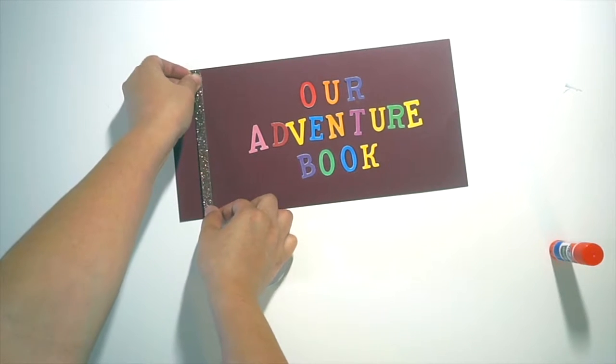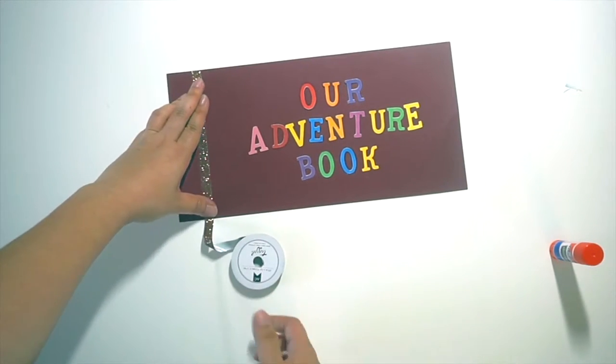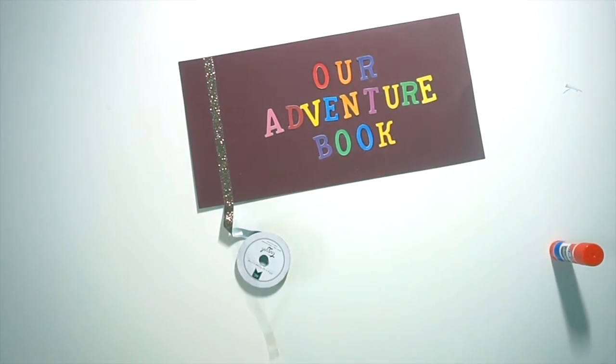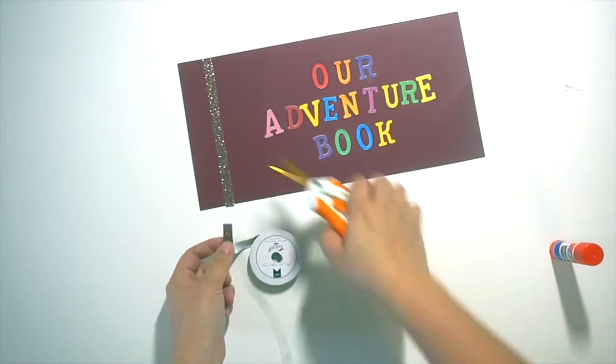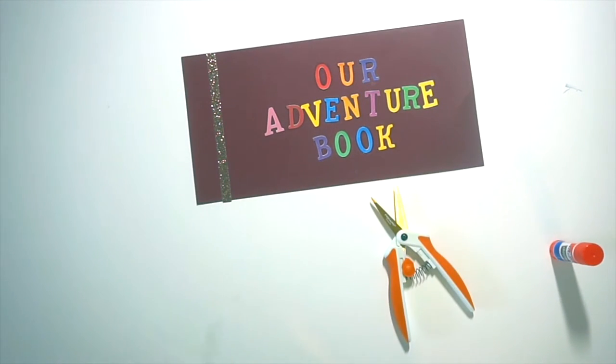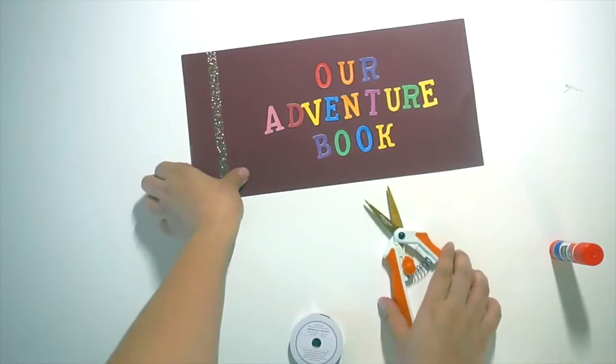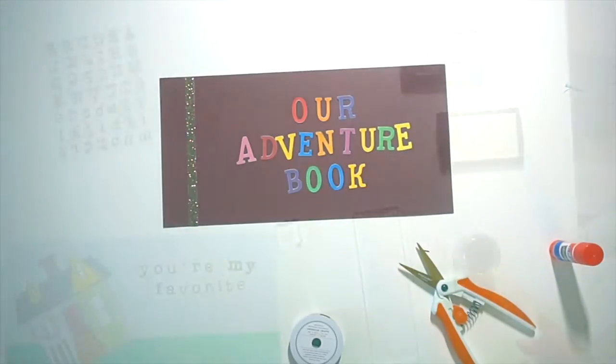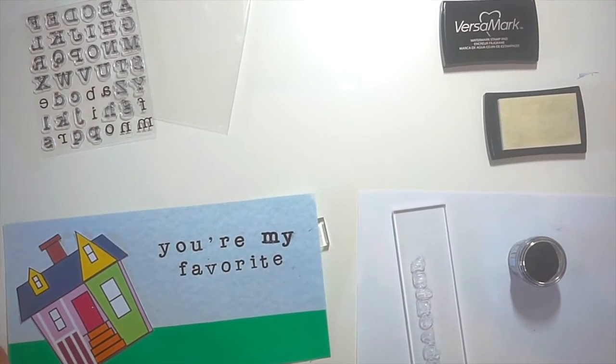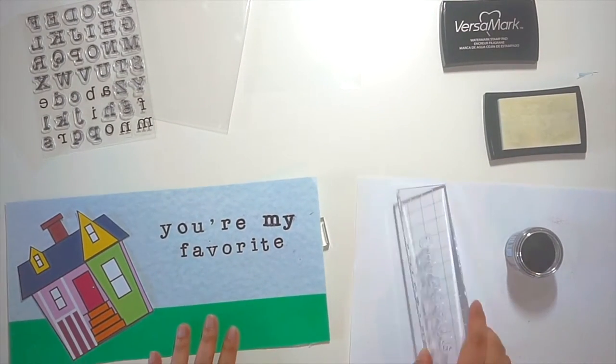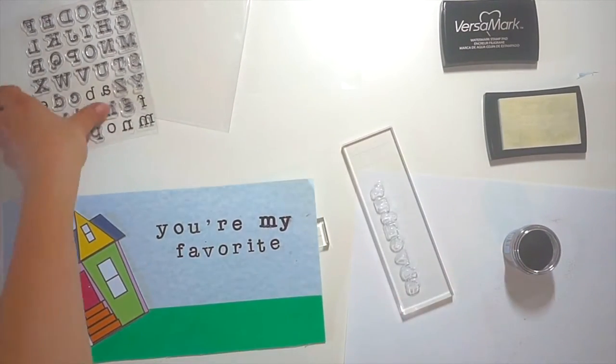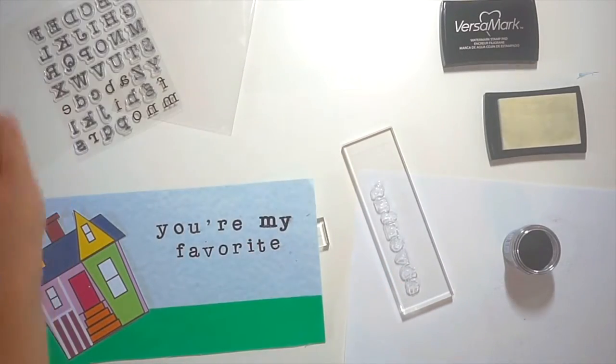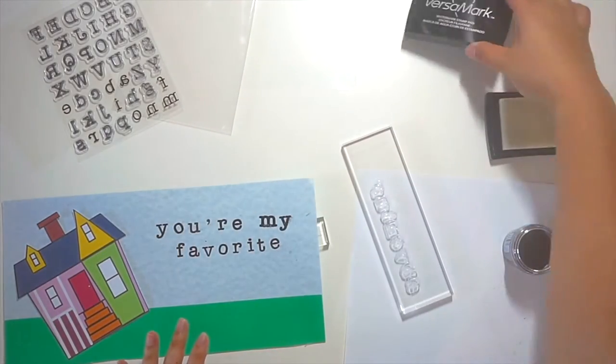After I place that washi tape on there, I'm going to be using my handy dandy craft scissors to go back and cut off some of the excess. I'm going to set the top flap aside and then go back to the bottom flap where I will be doing some stamping and embossing. Okay, back to the bottom flap. I've got all my stamping and embossing supplies here: an acrylic block, some alphabet stamps, some Versamark ink, and some Ranger embossing powder in black.